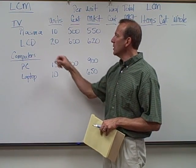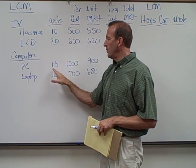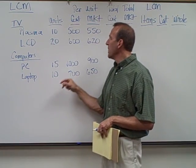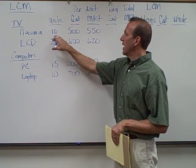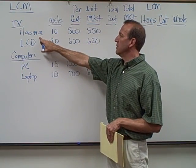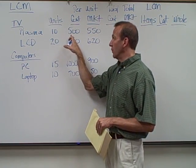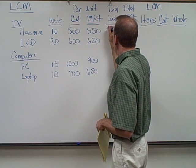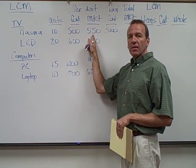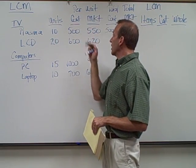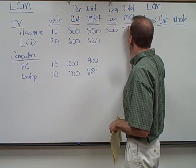We're going to look at that in just a second. We have 10 plasma TVs at a cost of $500 each. Taking 10 units times $500 gives us a total cost of $5,000. The current market value has gone up to $550, giving us a total market value of $5,500.